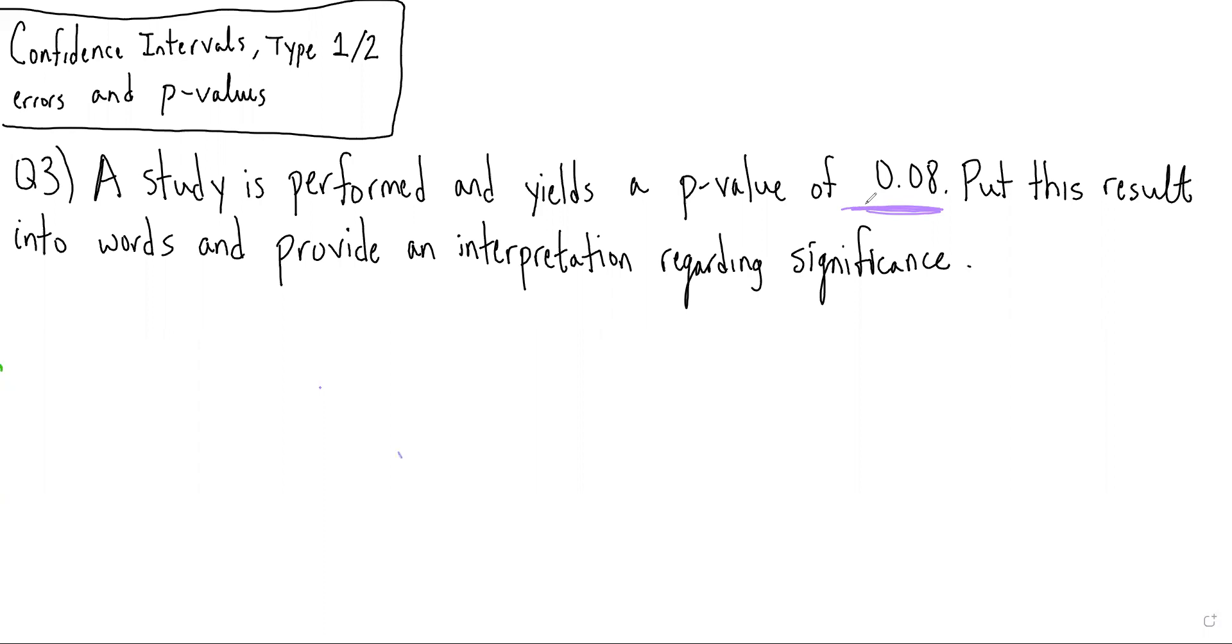So if you recall from the lecture, a p-value of 0.08 means that there is an 8% chance of seeing a result as extreme or more extreme than the one that was obtained, assuming the null hypothesis is true. That's a really important component, that last part about assuming the null is true.